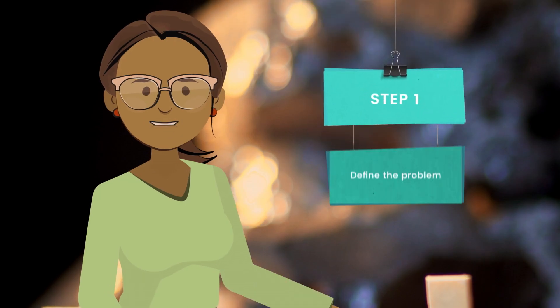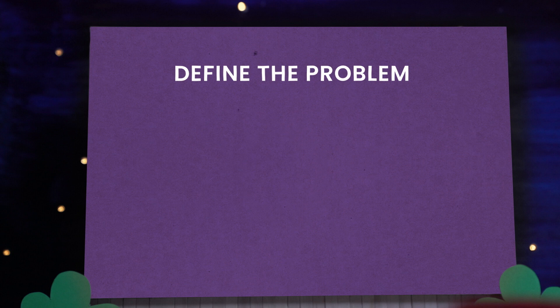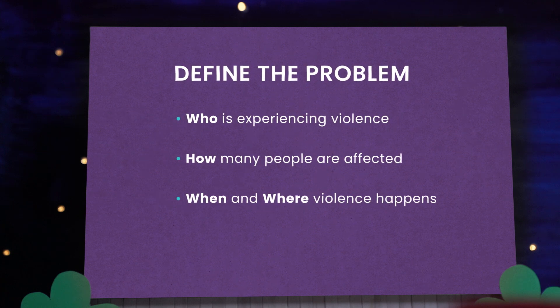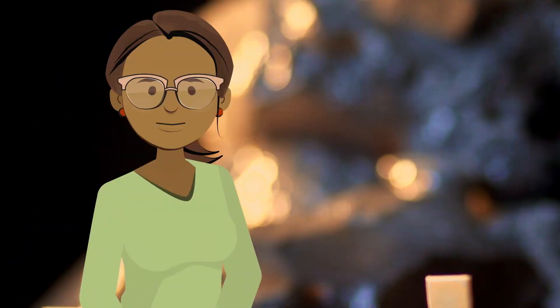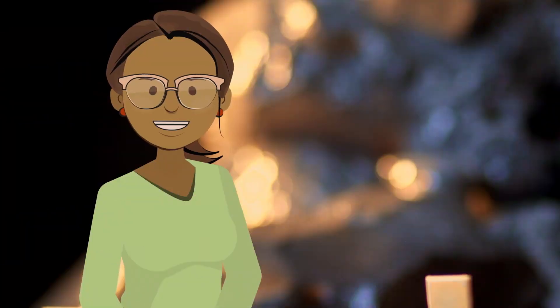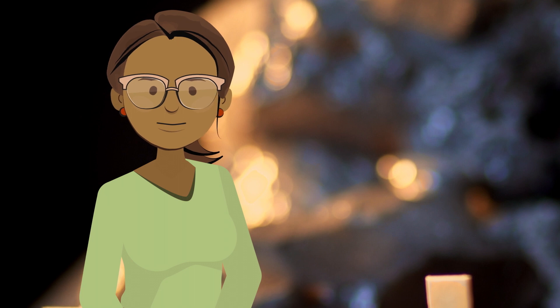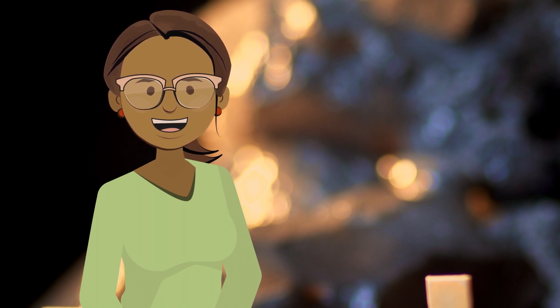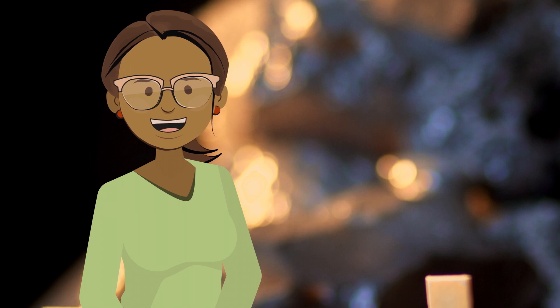Step one is to define the problem we are facing. This involves collecting data to determine who is experiencing violence, how many people are affected, when and where violence happens, and how often it occurs. When step one is completed, you should have answers to who, what, when, where, and how. These data may also reveal trends so you can see what is happening to the problem over time.